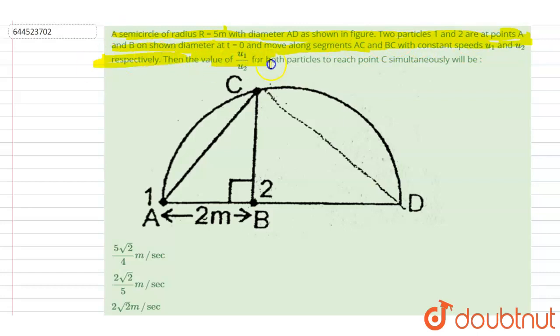Then find the value of u1 by u2 for both particles to reach C simultaneously. So if you see here, we want both of them to reach point C simultaneously, right? So let us find out the distance AC and distance BC.